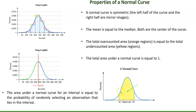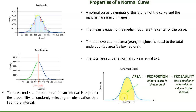The area under a normal curve within a certain interval represents the proportion of data values in that interval. Since probability is the same as proportion, area under a normal curve can also be interpreted as probability — specifically, the probability that a randomly selected data value falls in that interval. So area has two meanings: proportion and probability.